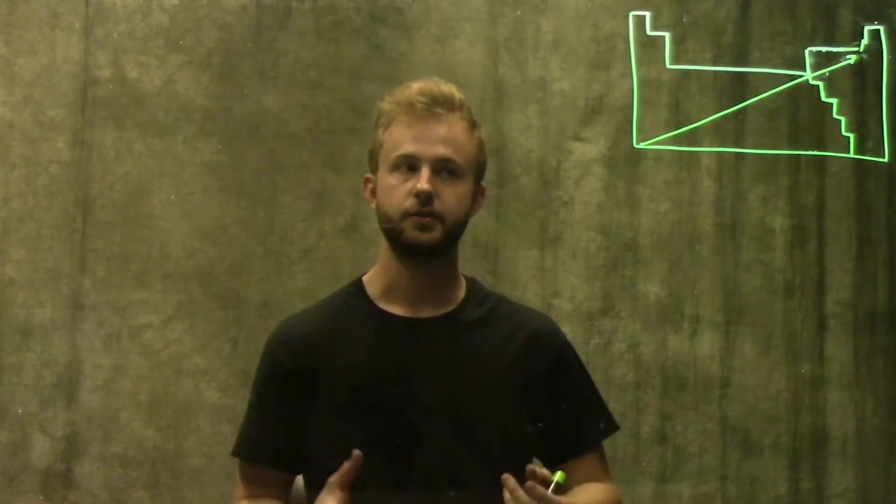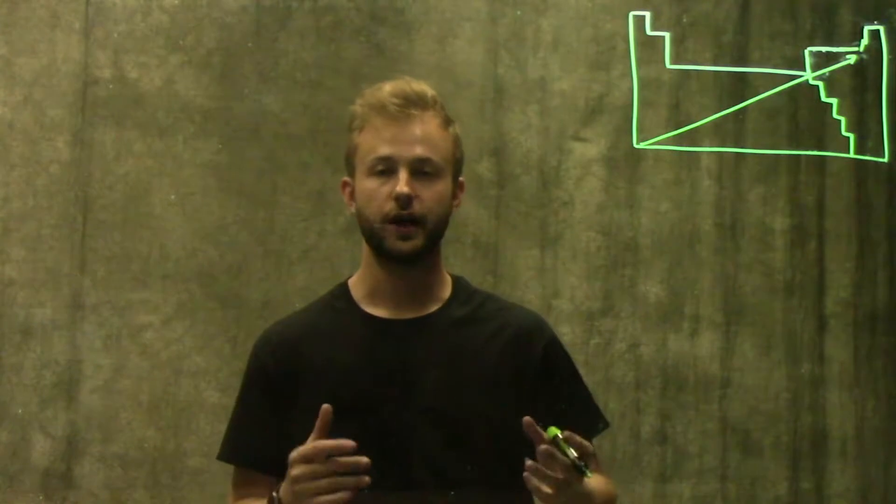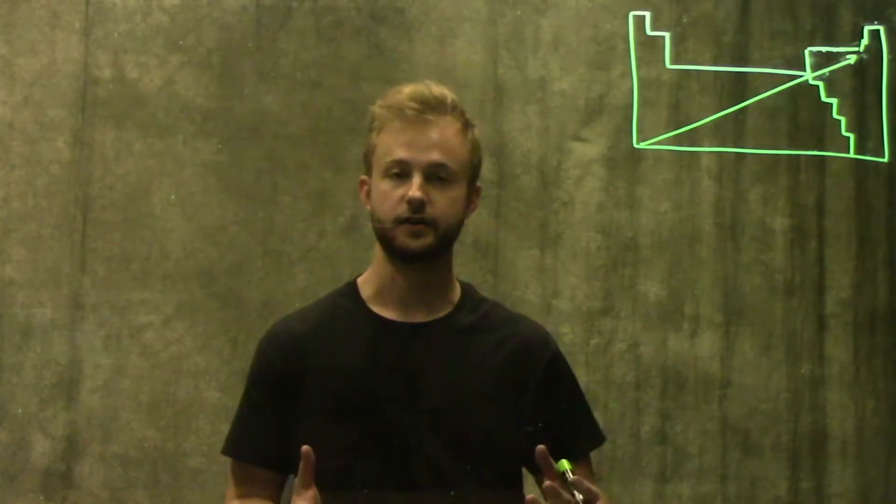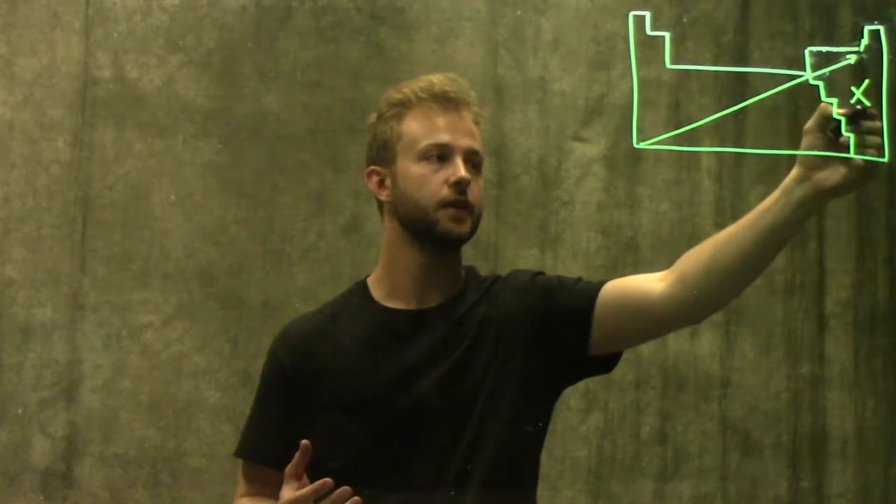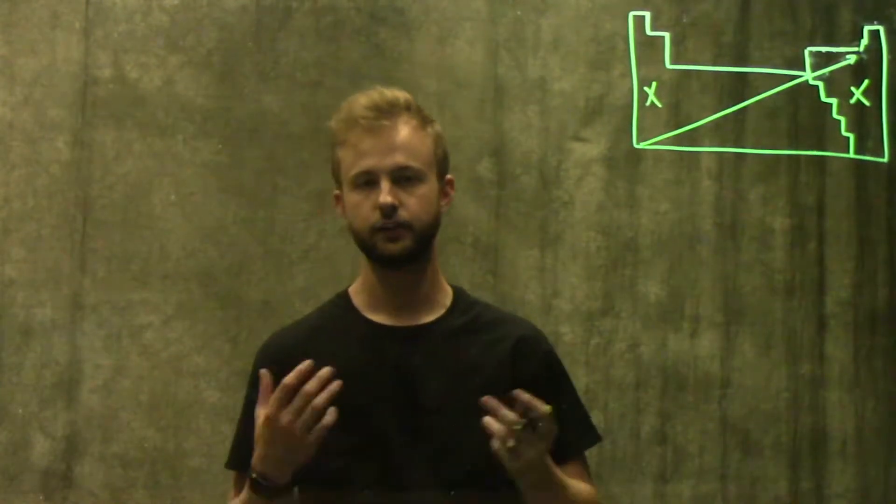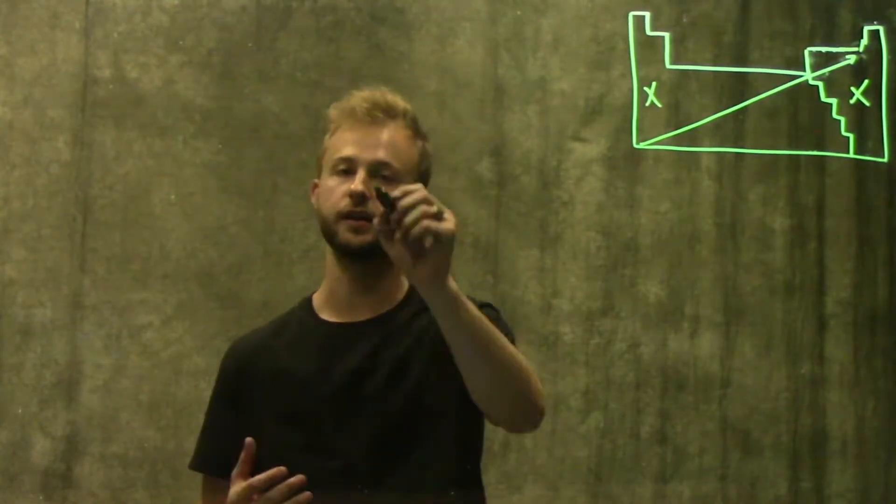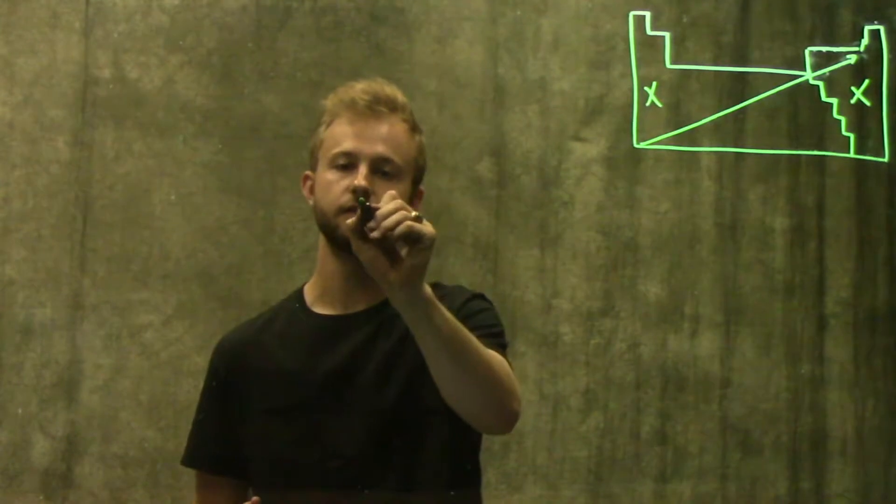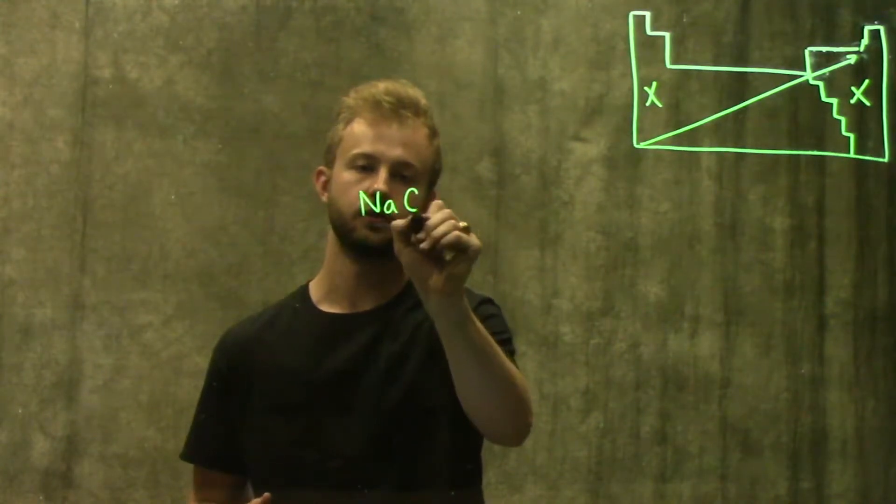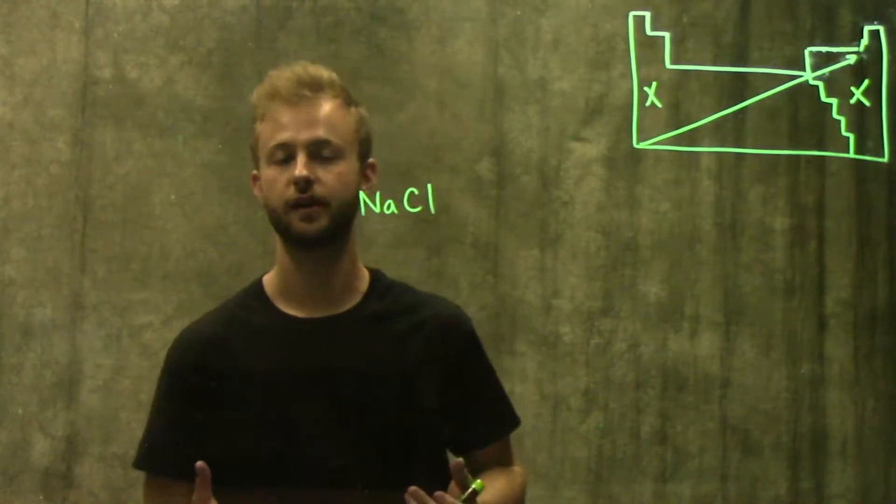An ionic bond is a bond between two atoms with very different electronegativities, such as a nonmetal and a metal. An example of this that's very important in biological systems is sodium chloride, which is salt.